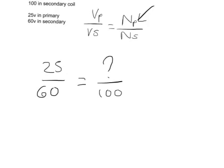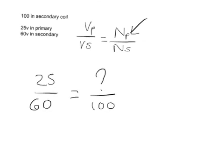Okay, so we are going to now work out how many coils there are in the primary. So to do that, our formula is already rearranged. I have the question here at the top.